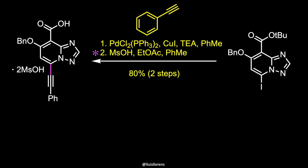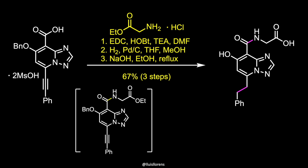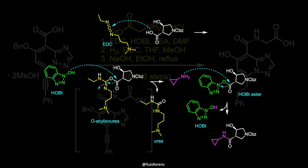Removal of the tert-butyl group provided the carboxylic acid in 80% yield over two steps. Amide bond formation with the ethyl ester of glycine was accomplished under these conditions. EDC activates the carboxylic acid, which is attacked by HOBt to generate an active ester that is displaced by the amine. For more information about this mechanism, check out the video about the synthesis of lascufloxacin.